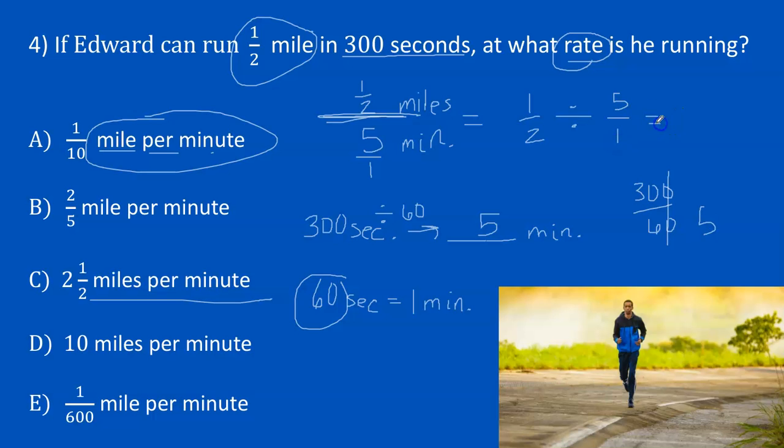Now we're ready to keep, change, reciprocal. So I keep the first fraction. You always keep the first fraction. You change the division to multiplication, and then you record the reciprocal of 5 over 1, which will be 1/5. Then we multiply across. 1 times 1 gives me 1, and 2 times 5 is 10. So we get 1/10.